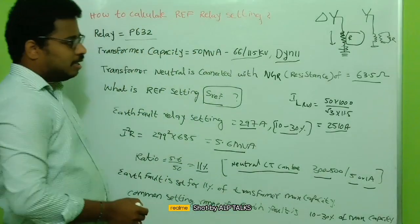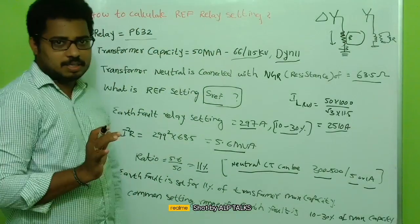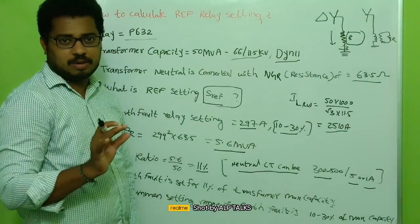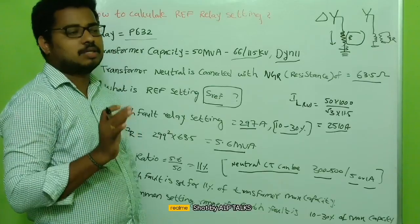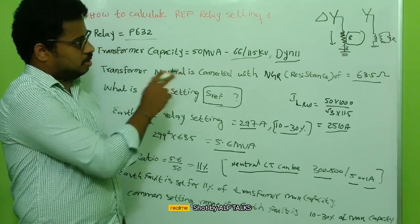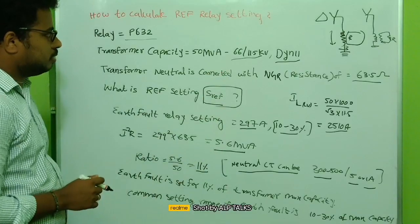The major parameter is 10 to 30 percent of the rated current. That's what the neutral, the resistance you need.